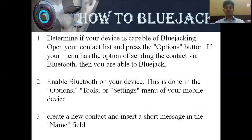How to do Blue Jacking? There are 7 steps. Step 1: determine if your device is capable of Blue Jacking — open your contact list, press the options button, and if your menu has the option to send a contact via Bluetooth, you are able to Blue Jack. Step 2: enable Bluetooth on your device, done in the options, tools, or settings menu of your mobile device. Step 3: create a new contact and insert a short message in the name field.